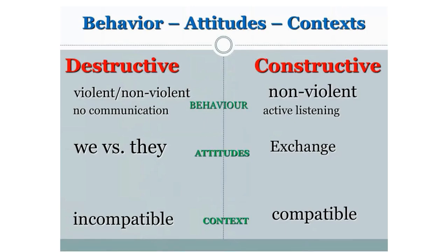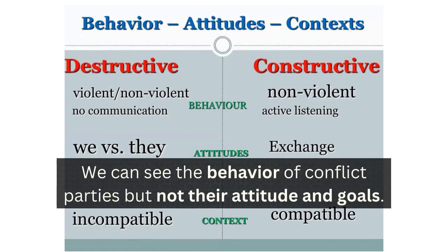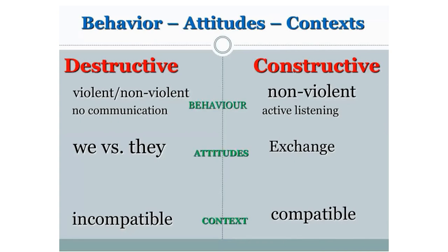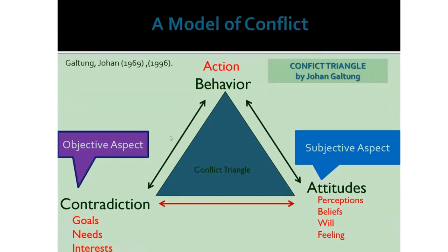We can visibly see conflict parties' behavior, but we may not see conflict parties' attitude and goals. So if you really want to resolve conflict, it's not only about handling violent or non-violent behavior — we also need to study what conflict parties' attitudes are and what their contradictions and goals are. According to Johan Galtung, whether it is at the interpersonal level or national level of conflict, there are those three factors in all conflict.